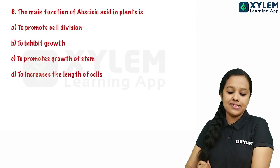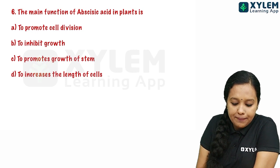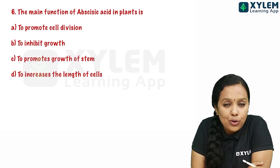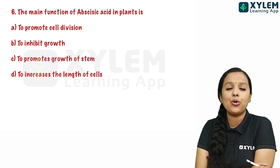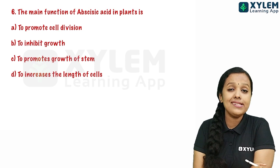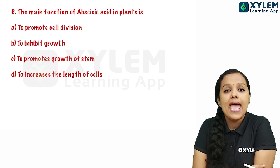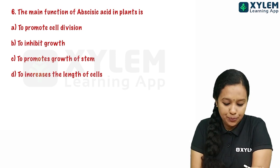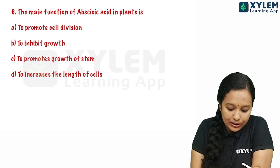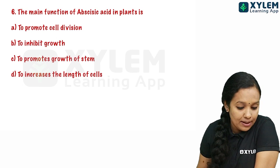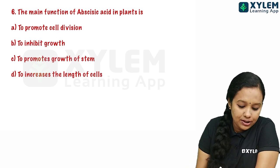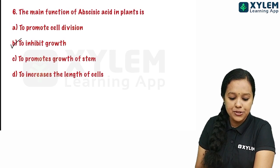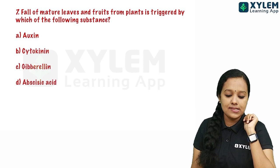The sixth question: the main function of abscisic acid in plants. The options include promoting cell division, promoting growth, promoting growth of stem, and increasing cell length. Abscisic acid is a growth inhibitor. So the correct answer is Option B.